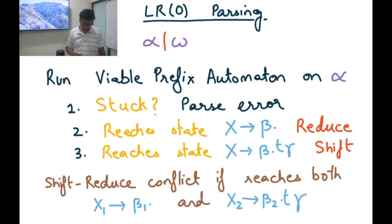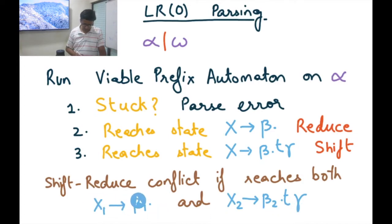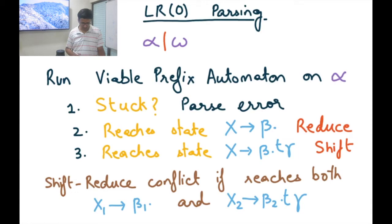Similarly, if we reach two states — one being X1→β1• indicating a reduce, and the other X2→β2•Tγ indicating a shift — that is a shift-reduce conflict. We don't know whether to shift the next token (expecting T) or to reduce β1 to X1, and there is no lookahead to help decide.